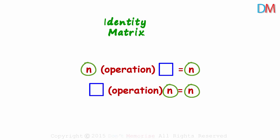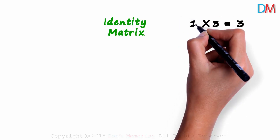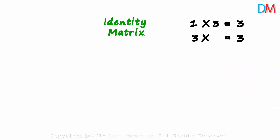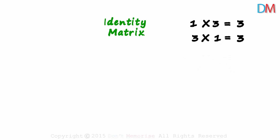Let me give you a couple of examples. What multiplied by 3 will give us 3? What multiplied by this number gives us the same number — it's 1. And 3 multiplied by what will give us 3? 1 again. Multiplying any number with 1 gives us that same number. The number 1 is called the multiplicative identity — no matter what number it is multiplied with, it will give us the same number.